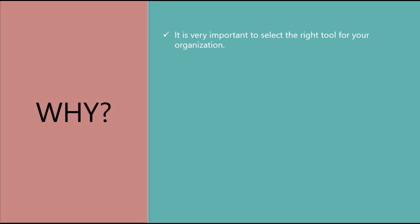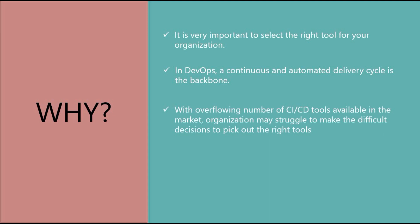Why are we talking about CI tools? It's really important to select the right tool for your organization. If you only know one tool and go with it, you may later realize it wasn't the right choice. You should know the different tools and select the right one. In DevOps, continuous integration and automated delivery is the backbone of the overall process — when you have source code in a version control system, integration and automation are the backbone of DevOps.